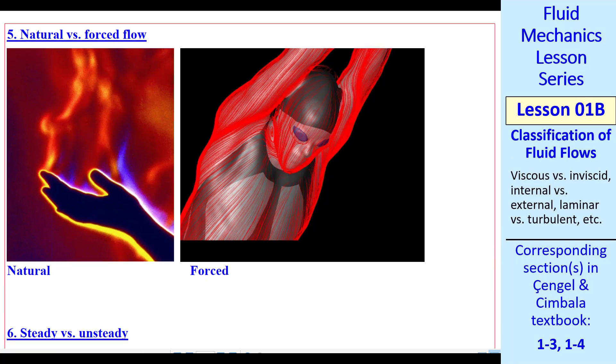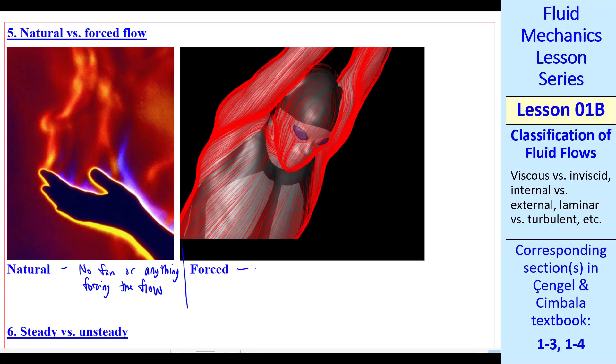Okay, quickly through the rest of these. Natural versus forced, that's kind of obvious. Natural flow means there's no fan or anything forcing the flow. It just happens by itself. For example, flow just due to convection, thermal convection versus forced. There's a fan, or in this case a swimmer, there's muscles that are moving someone, propelling this person, forcing the flow. If this person just sits still, he or she will stop.